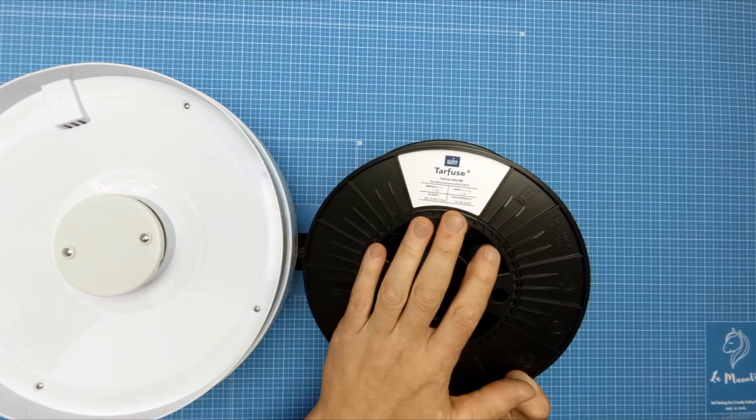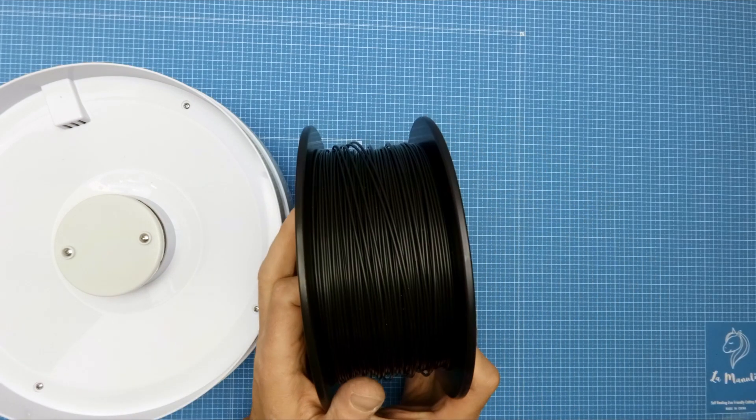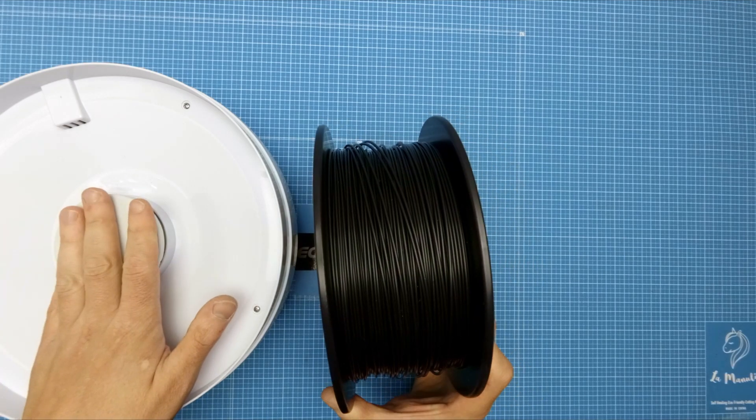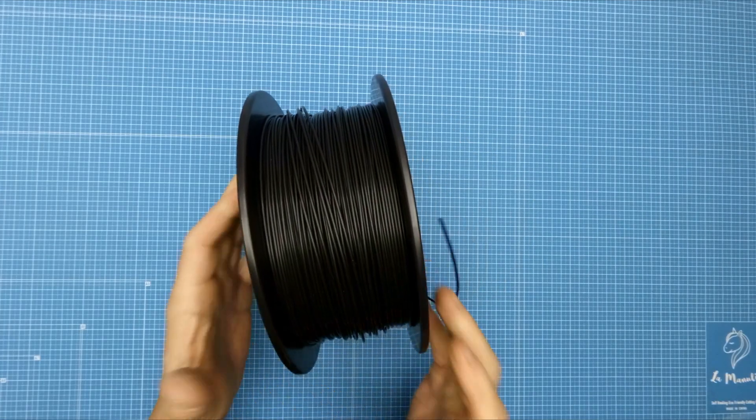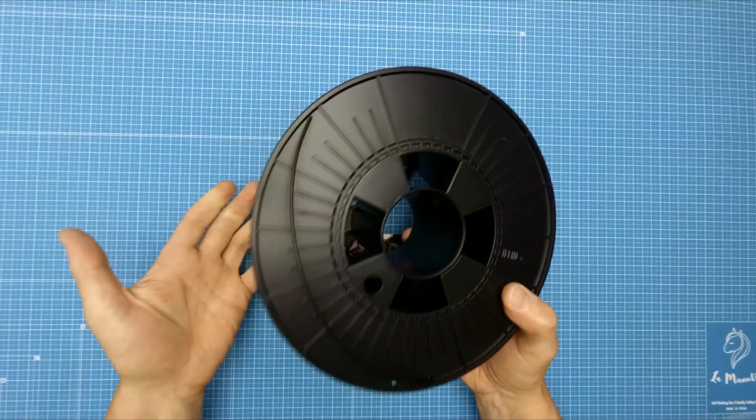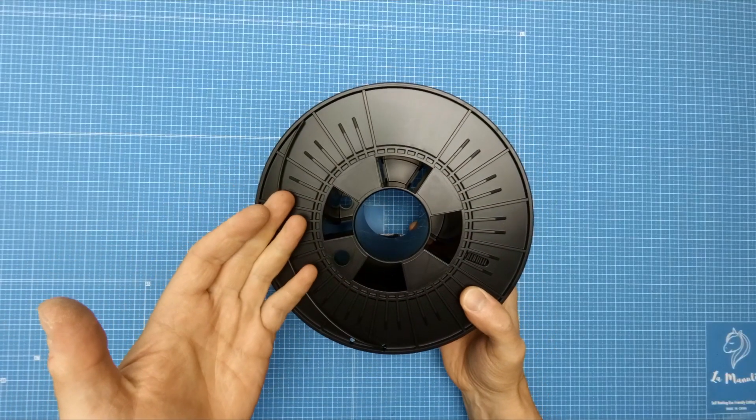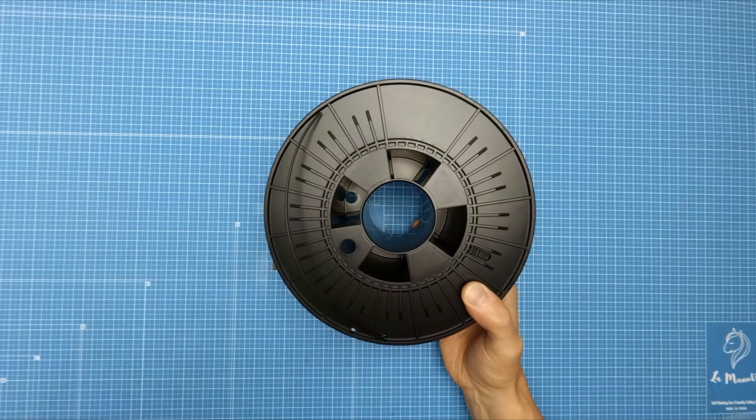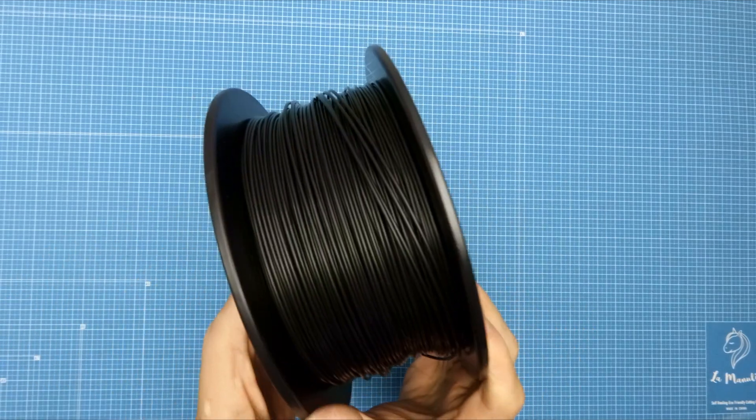Today I will dry my Terfuse ASA filament using a regular foot dehydrator. When I was printing with it recently I noticed the popping sound, which means that it is not dry enough to print with proper quality. So the only solution to that is to dry it.